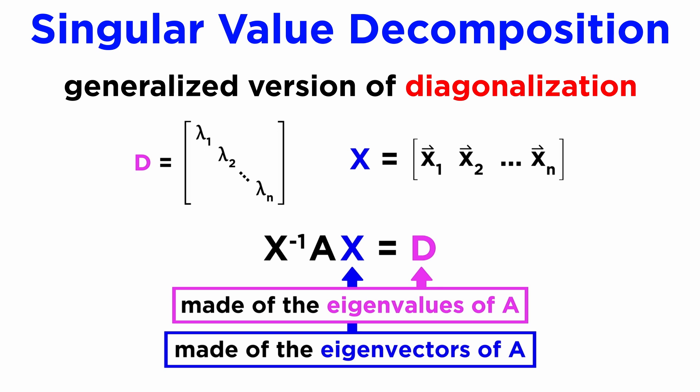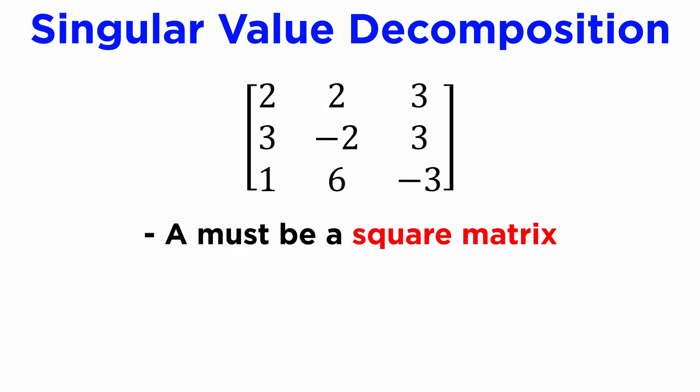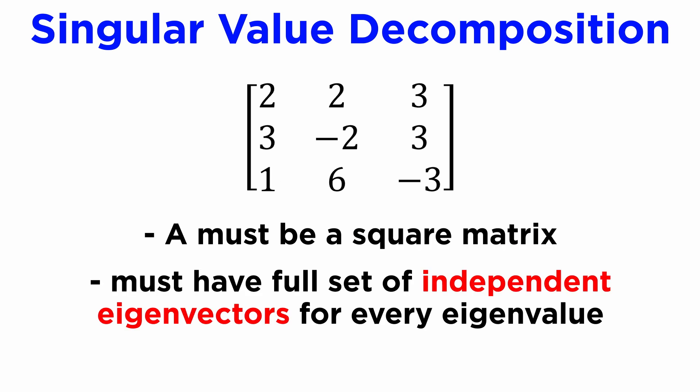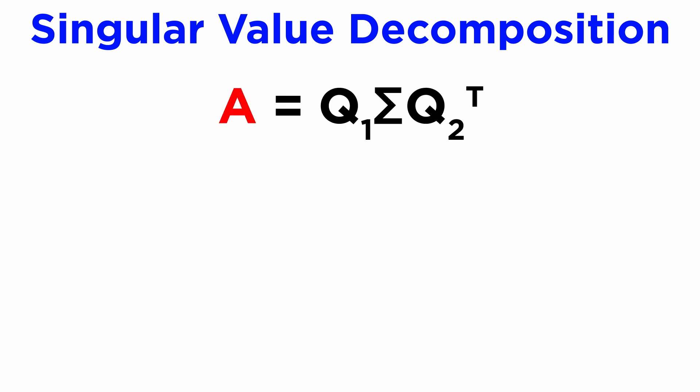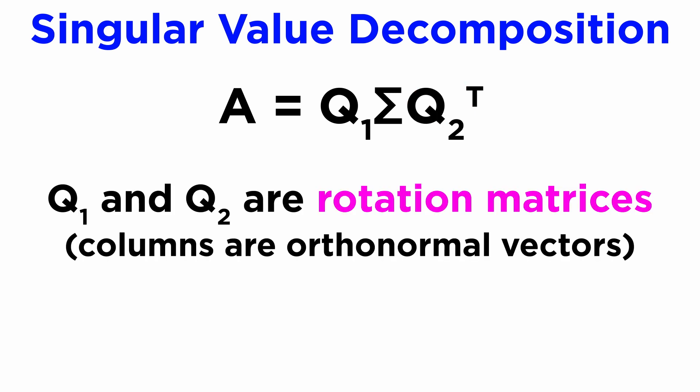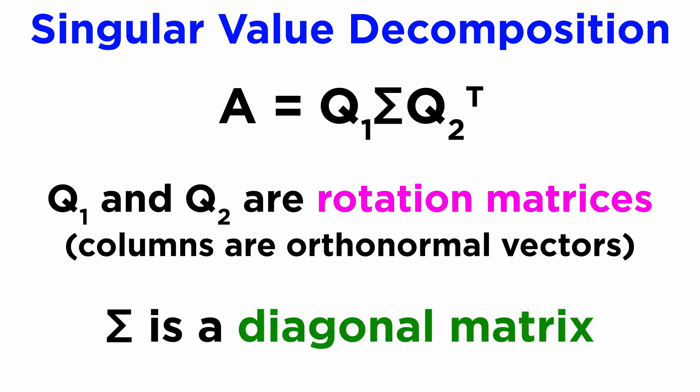The last decomposition we will look at is called the singular value decomposition, or SVD for short. The SVD can be thought of as a generalized version of diagonalization using eigenvectors and eigenvalues. Diagonalization only works when the matrix A is square and has a full set of independent eigenvectors for every eigenvalue. This is not always the case — we might have a matrix A which is square but has repeated eigenvalues, and it might not be possible to find enough corresponding eigenvectors to construct the eigenvector matrix. In these cases, we must turn to the singular value decomposition, which states that any matrix A can be written as Q1 times capital sigma times Q2 transpose, where Q1 and Q2 are both rotation matrices, meaning their columns are orthonormal vectors, and capital sigma is a diagonal matrix.